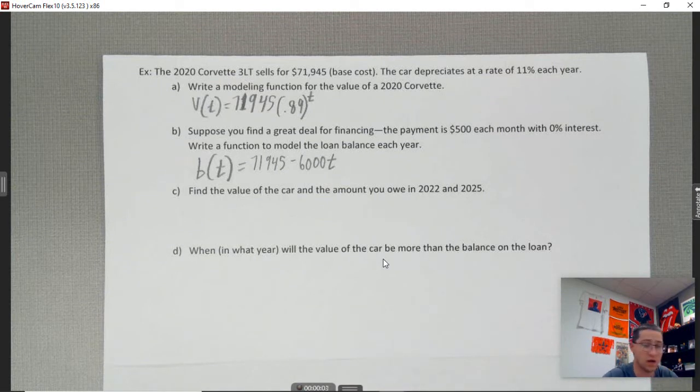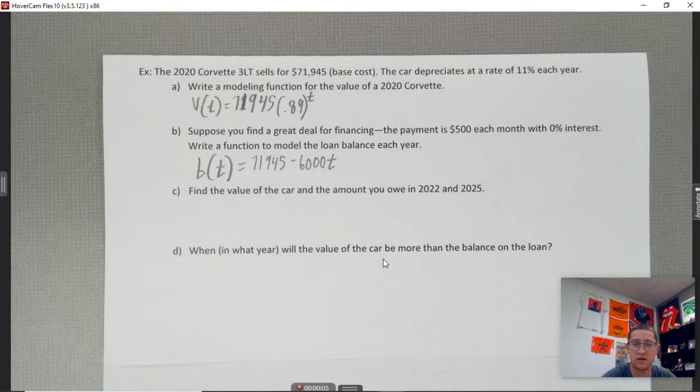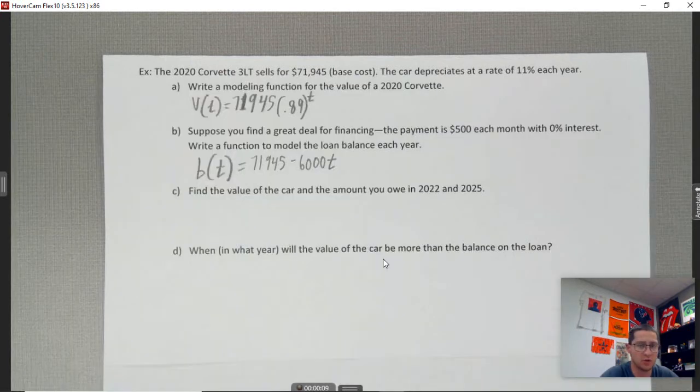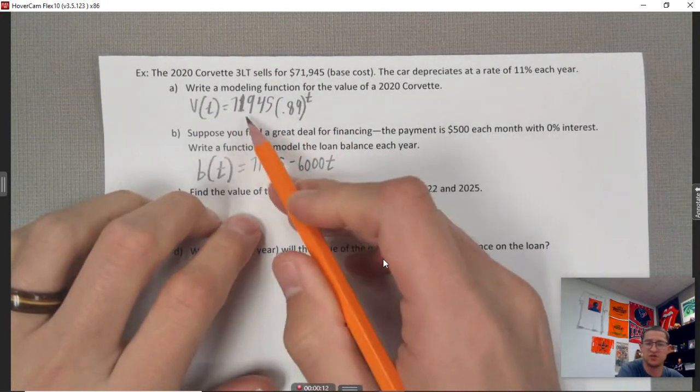Okay, I totally botched that problem but anyways I have it nice and streamlined now. So the Corvette problem - the car depreciates at 11% each year, and I already have the functions filled in.